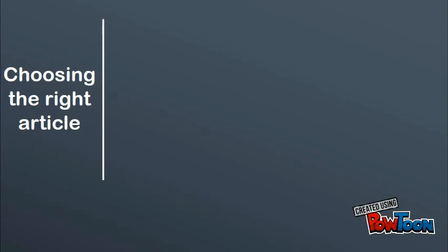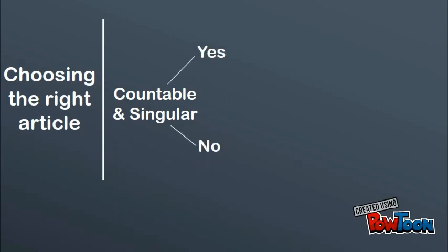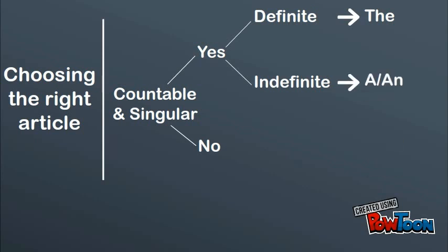Firstly, determine whether the noun is countable and singular. After this, determine whether the noun is definite or indefinite. For a singular, countable and definite noun, you should use the article the. For a singular and countable noun that is indefinite, you should use the article a or an.